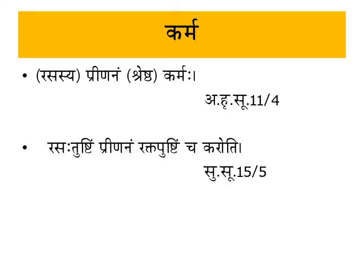Now, the Karma (functions) of Ras Dhatu. The first karma is Dharan — Dhariyati, meaning to sustain. Dharan means to maintain the Ahishya, i.e., the association of Sharira (body), Indriya (sense organs), Satwa (mind), and Atma (soul) for a prolonged time. This is the general function of Ras Dhatu along with all other dhatus.